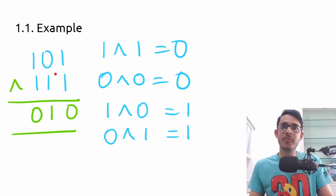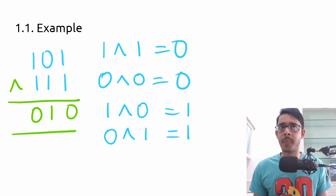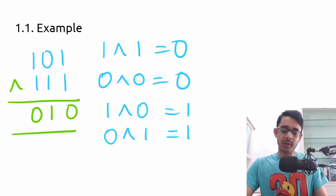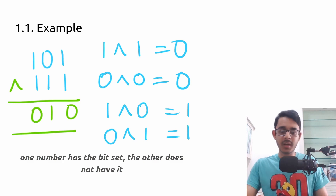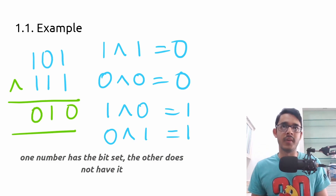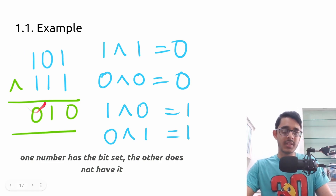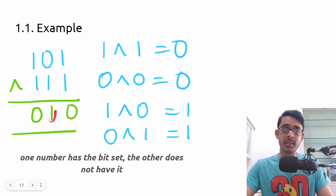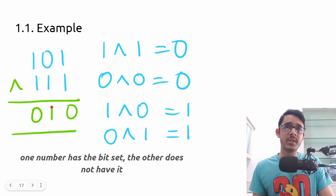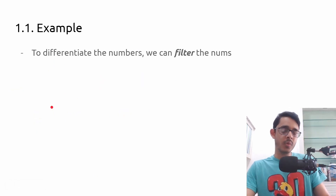Maybe we are going in the right direction. What we can realize is that one of these numbers has a particular bit set and the other does not. Whenever there is a disagreement on a bit, one of the numbers will have it set and the other won't. We can use this to differentiate x and y by filtering out numbers based on that bit.